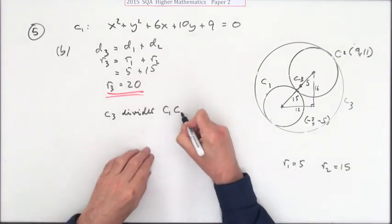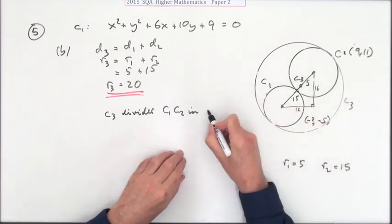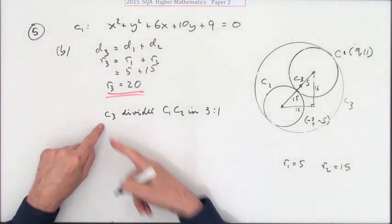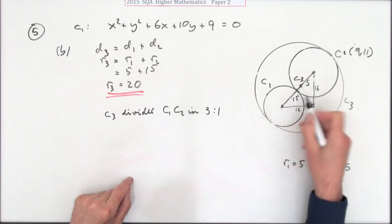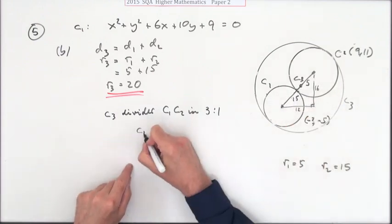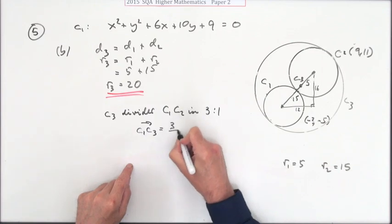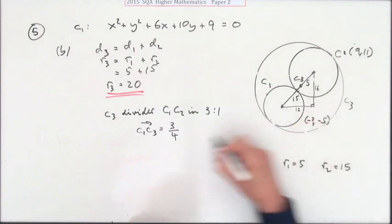It just doesn't look like it there because of the scales. You can figure out C3 because that means that's going to be three out of the four bits. That means that going from C1 to C3, it's going to be three quarters of the distance between them. We already had that, it's going to be three quarters of 12, 16.